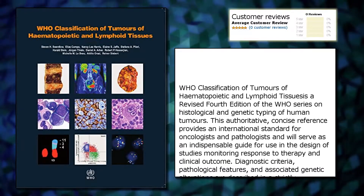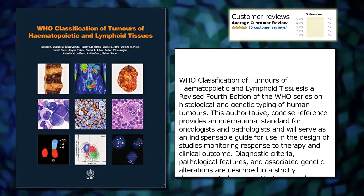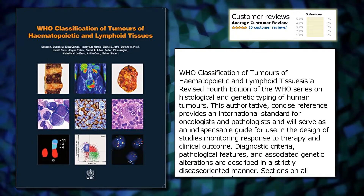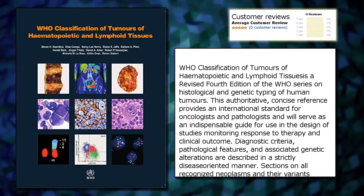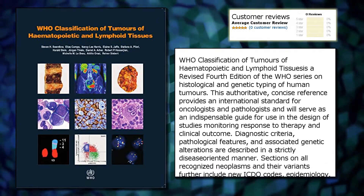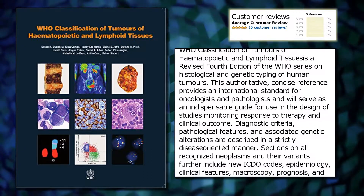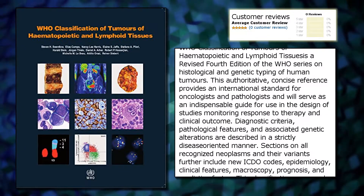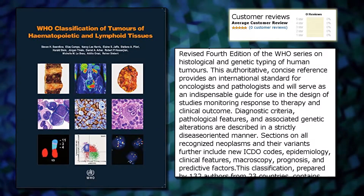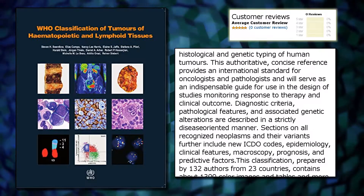WHO Classification of Tumors of Hematopoietic and Lymphoid Tissues is a revised fourth edition of the WHO series on histological and genetic typing of human tumors. This authoritative, concise reference provides an international standard for oncologists and pathologists and will serve as an indispensable guide for use in the design of studies monitoring response to therapy and clinical outcome.